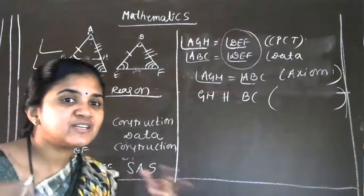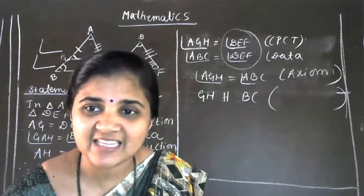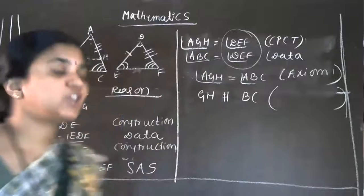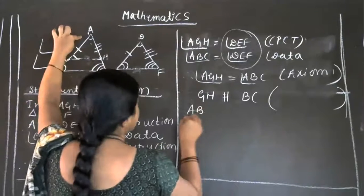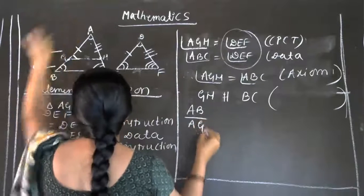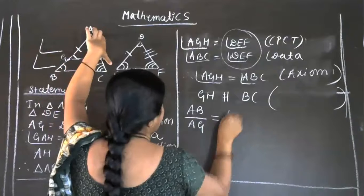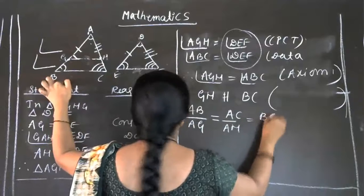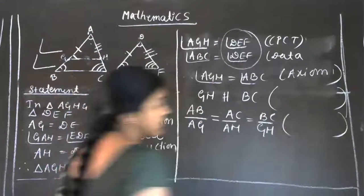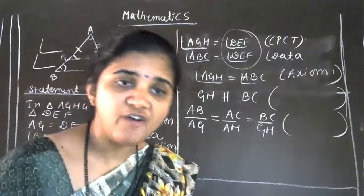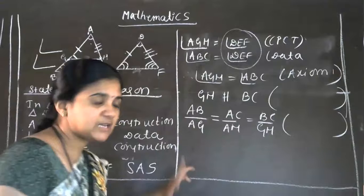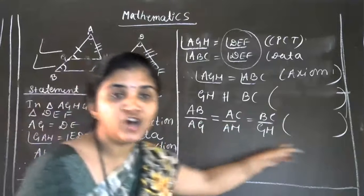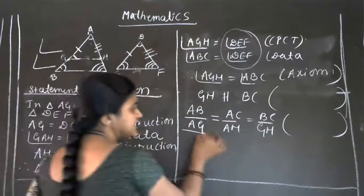Thales theorem corollary — we decide which one suits our proof. We apply corollary 3: AB divided by AG equals AC divided by AH, and the bigger side BC divided by GH. The reason is the corollary of Thales theorem. Now the last step — the numerator is correct for the proof, but the denominator we have to change: AG, AH, GH.